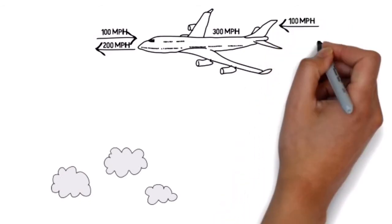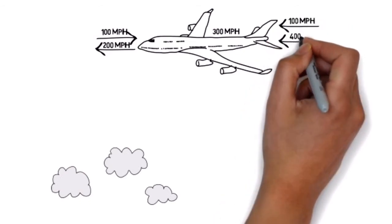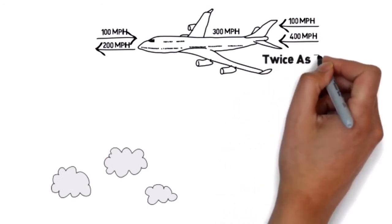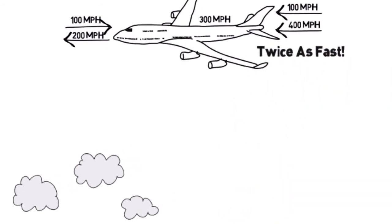The reverse effect can happen with tailwinds, causing the plane to travel closer to 400 miles per hour. That's twice as fast, and the same applies to money.